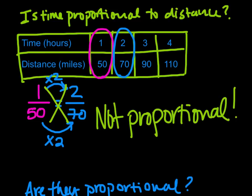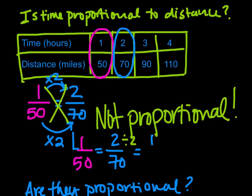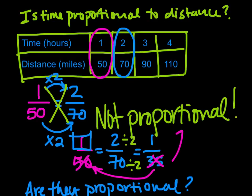Another way that you can look at it is we have that 1 to 50 ratio versus the 2 to 70 ratio, and if I were to divide 2 by 2, I will get 1, which is what I want on top. And if I were to divide 70 by 2, I get actually 35 on the bottom, which is not the same. Those are not the same. Nope, it is not proportional.